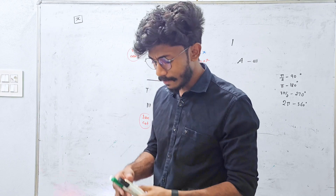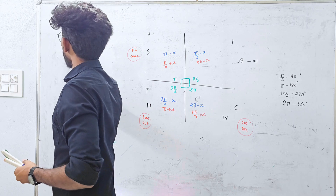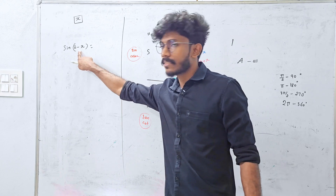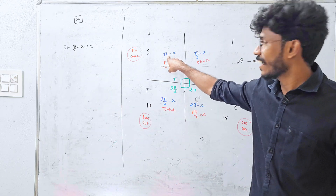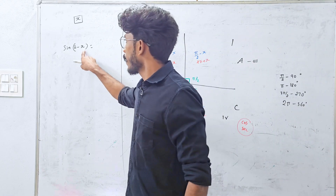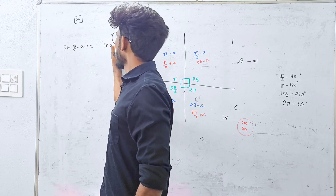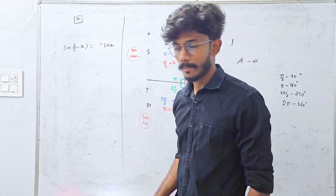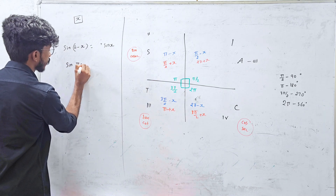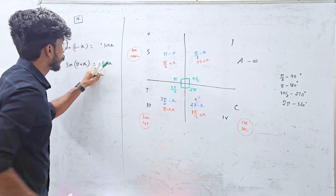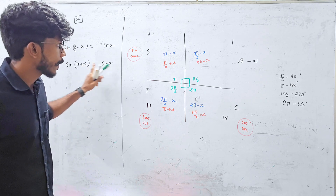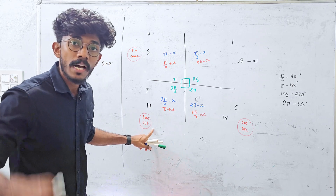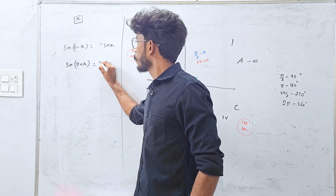Trigonometric formulas: What is sin(π − x)? π minus x is in the second quadrant. In the second quadrant, sin is positive. So sin(π − x) = sin x. But what does π plus x mean? π plus x is in the third quadrant. In the third quadrant, tan is positive but sin is negative. So the answer is negative sin x.